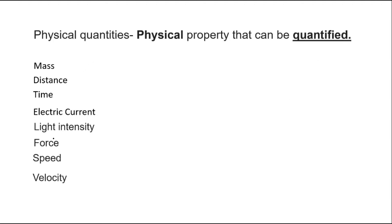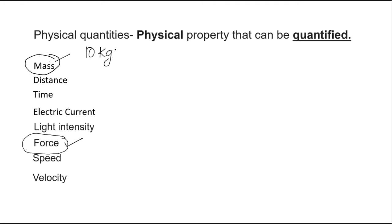Suppose if we take the same type of example but with the physical quantity force. What is the difference between force and mass? Mass can be expressed in kg — it can be quantified, it indicates magnitude. Therefore we can say that mass always has magnitude.